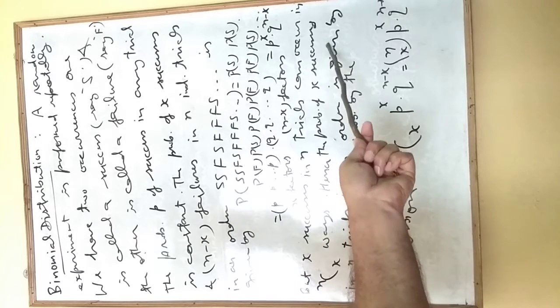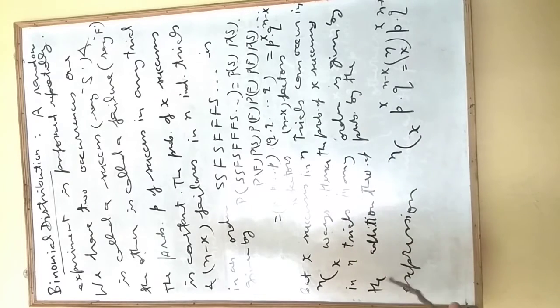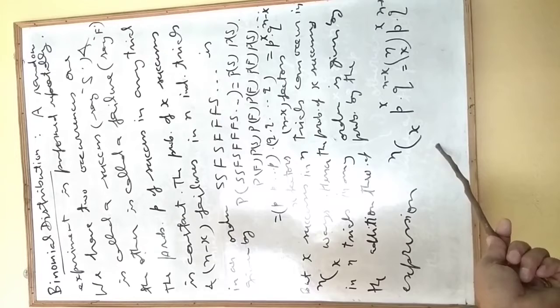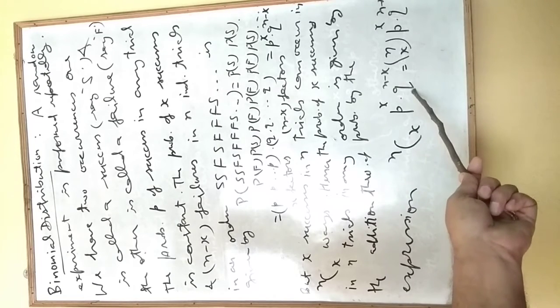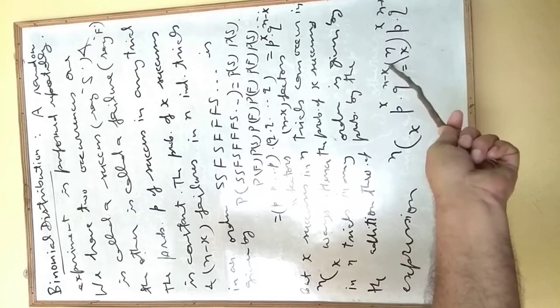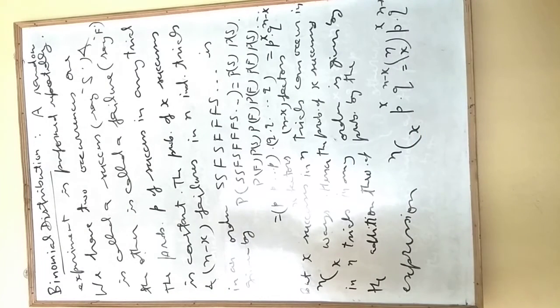Hence the probability of x successes in n trials in any order is given by the addition theorem of probability by the expression nCx P to the power x times Q to the power n minus x. It can be written as nCx within small bracket P to the power x times Q to the power n minus x.